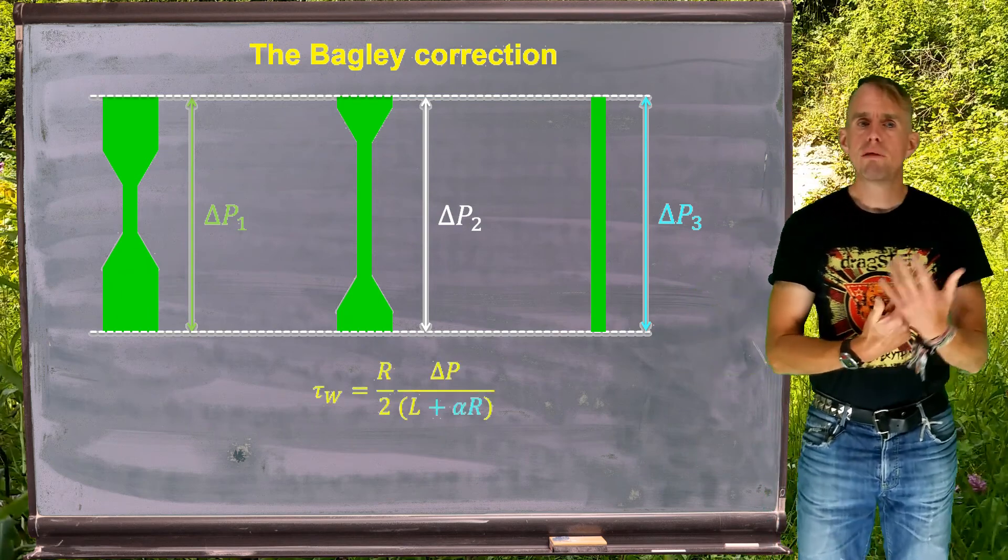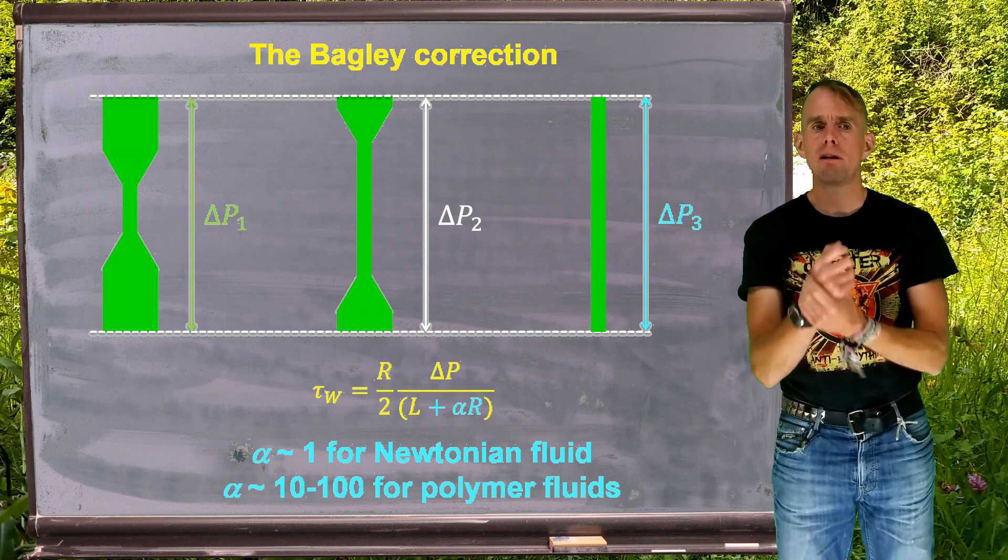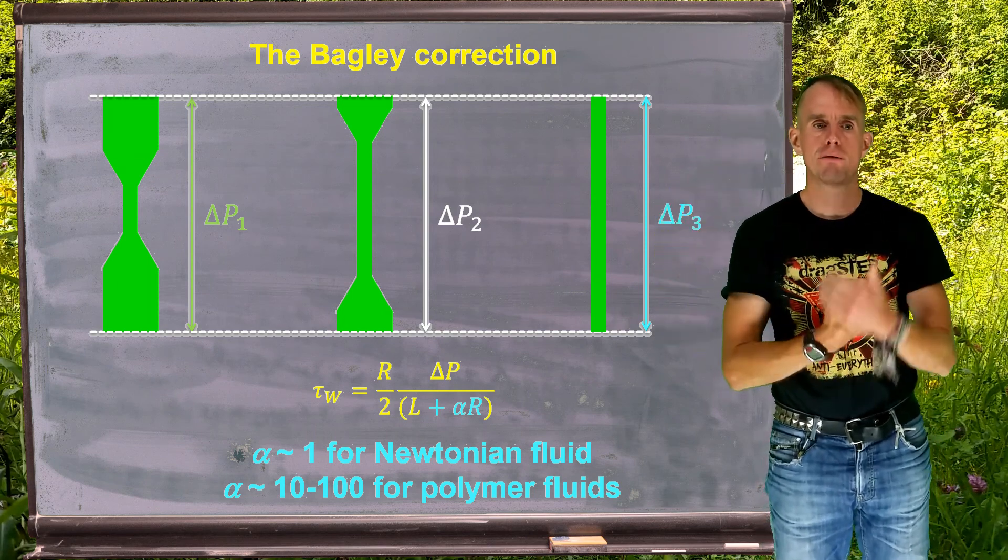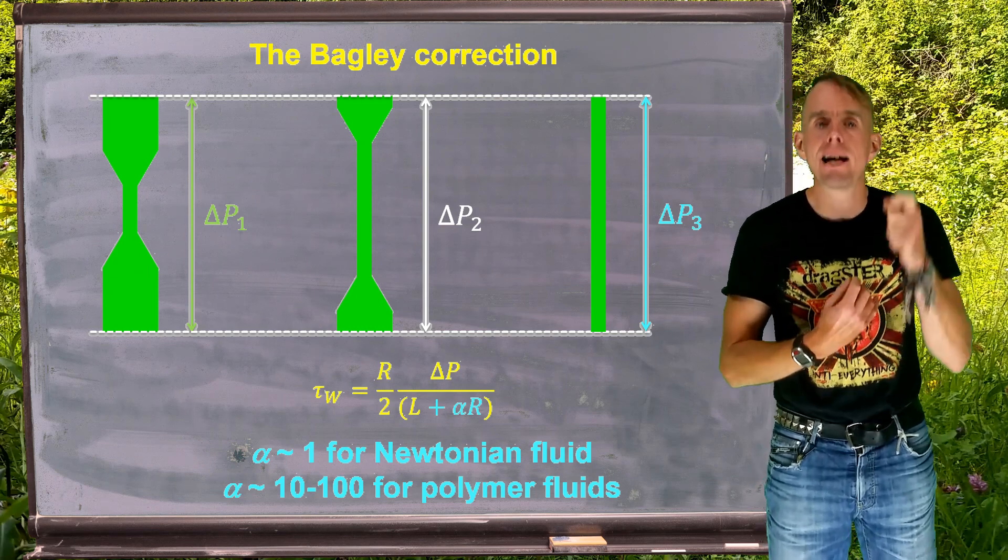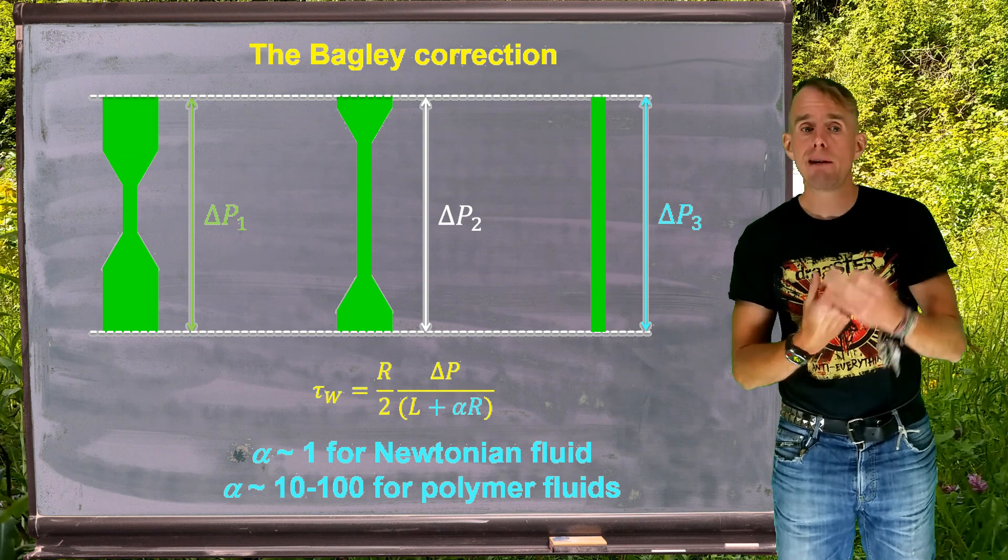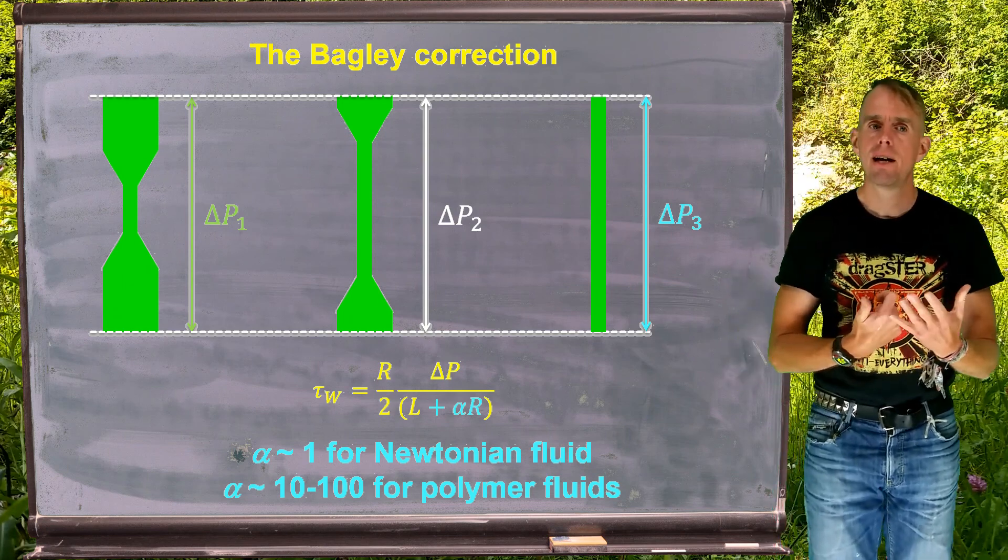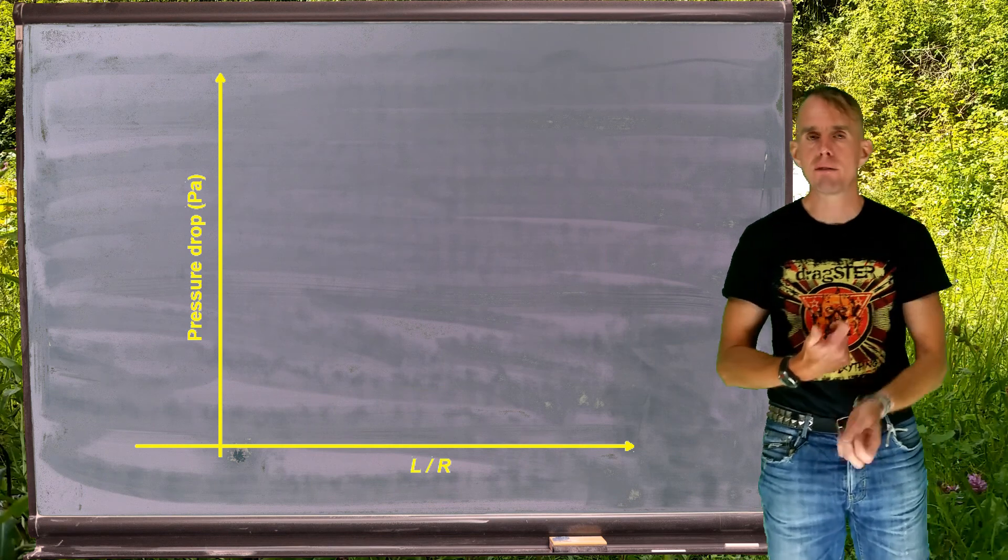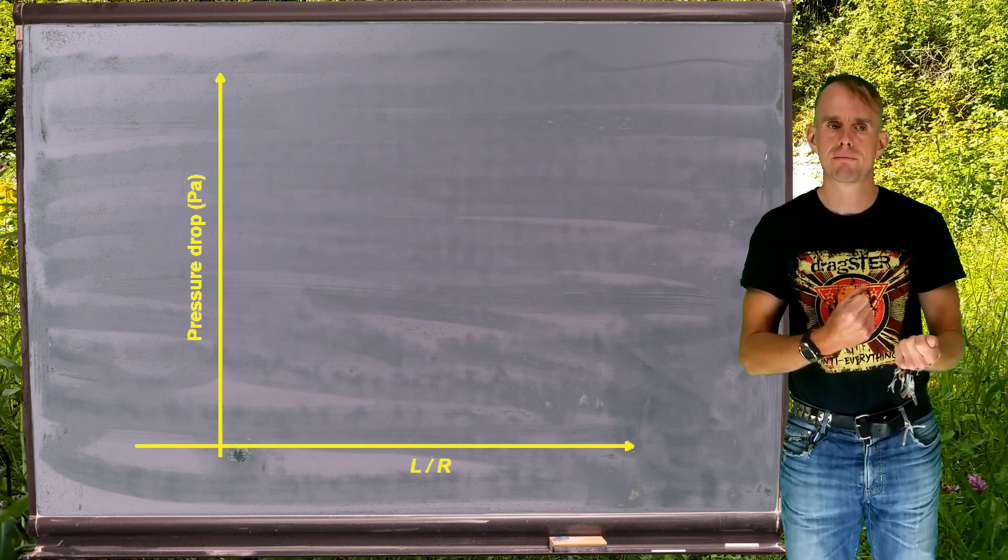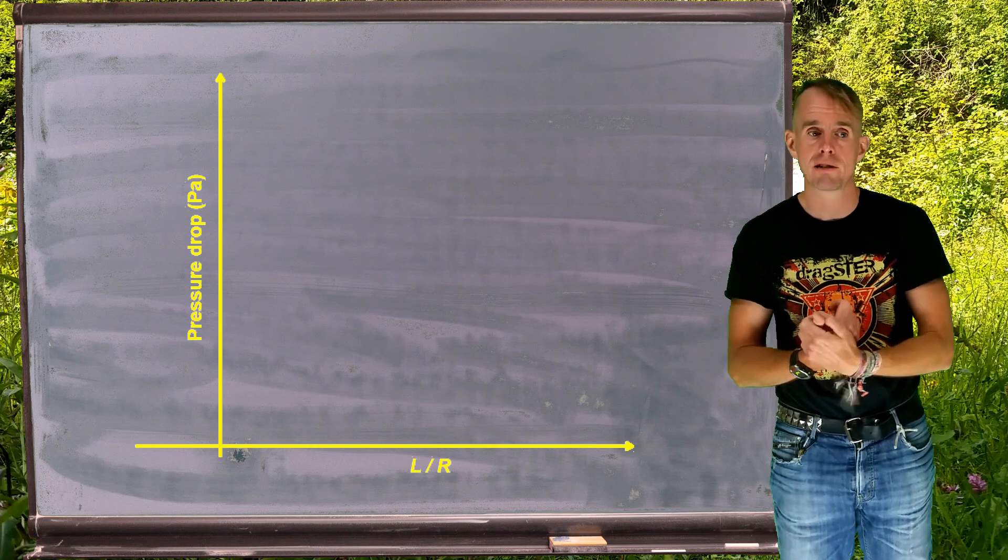If we use a different geometry capillary, we can change what the domination is of that entry and exit pressure drop. If I use a longer capillary, then the capillary pressure drop is going to be more dominant than the entry and the exit pressure drop. The idealized case is the pressure drop entirely across the capillary, which is what we're aiming for. So what we're going to do is repose the expression for wall shear stress to include a number of added radii that would be equivalent to the pressure drop across the entry and exit section. We have Δp over (l + αR), where α is our Bagley parameter. It's about 1 for a Newtonian fluid, but it can be anywhere between 10 and 100 for highly viscoelastic fluids.